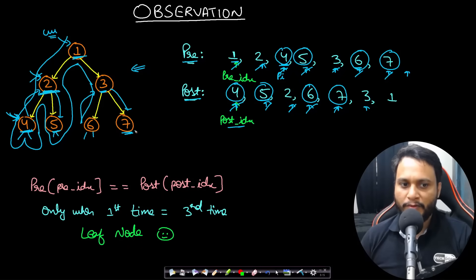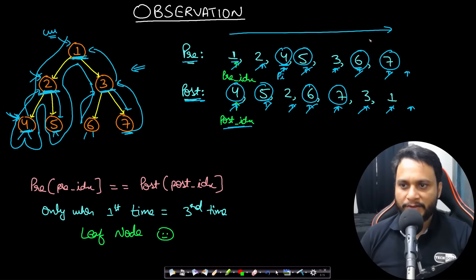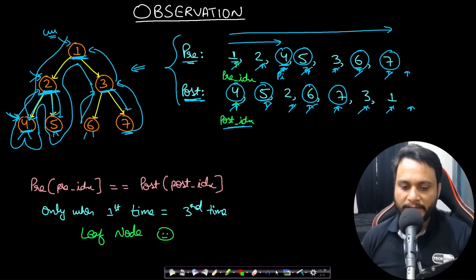When you go back to node 3 after processing its subtree and make the right call for node 7, both 7s match as a leaf node so move forward in both. When you return to node 3 for the third time, move the post-index forward. When you reach node 1 for the third time, move the post-index forward as well. Using this traversal technique — which I call '1-3 traversal' since the first visit is preorder and the third is postorder — you can build the binary tree recursively.